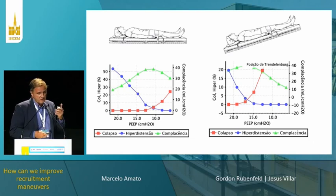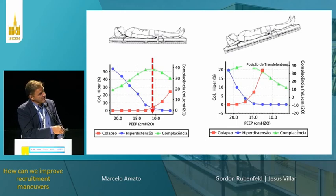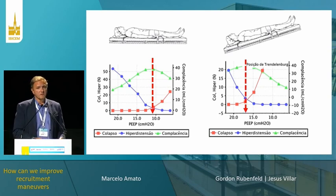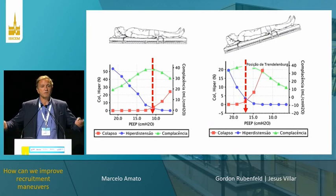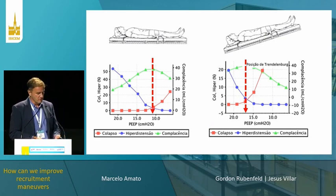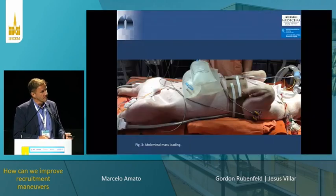Something interesting to understand the principles: in a supine patient, the crossing point is at 11. In the Trendelenburg position, the crossing point goes to 16 — because now the pleural pressure is more positive and you need a higher PIP to overcome it. If you had an esophageal balloon, you would reach exactly the same conclusion.